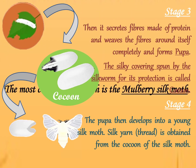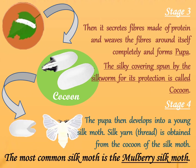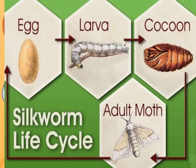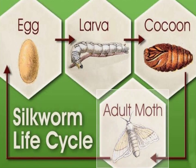The most common silk moth is the mulberry silk moth. Here is a diagram of the life cycle of the silk moth: Egg, Larva, Cocoon, Adult silk moth.